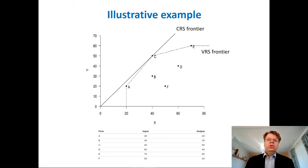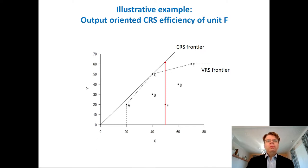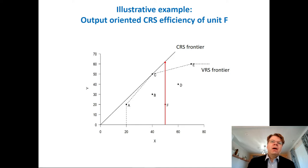To measure performance, the choice of orientation is a completely different matter. By choosing CRS or VRS, we have specified the frontier. To measure performance, let's take for example the last unit, F. If we use the output-oriented efficiency metric, the red line indicates that we are trying to expand the outputs of unit F as much as possible until we reach the efficient frontier. In the CRS specification, it would go all the way to this solid black line, and the benchmark for unit F would be unit C expanded to hit the tip of the red arrow.